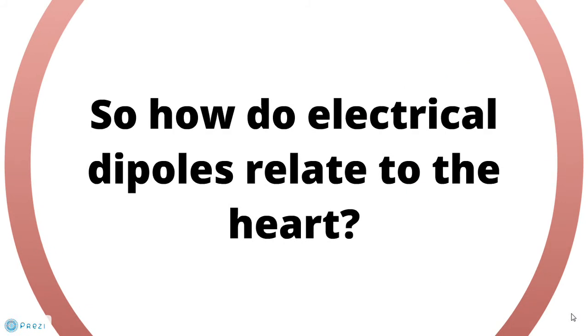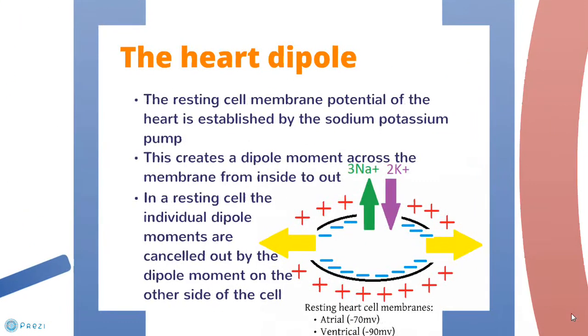So how do electrical dipoles relate to the heart? This drawing represents a resting heart cell. As you can see the inside of the cell is negatively charged. For atrial cells this is about minus 70 millivolts, for ventricle cells it is about minus 90 millivolts.